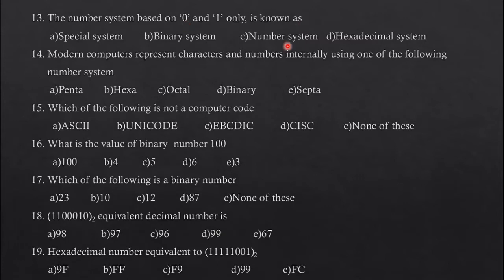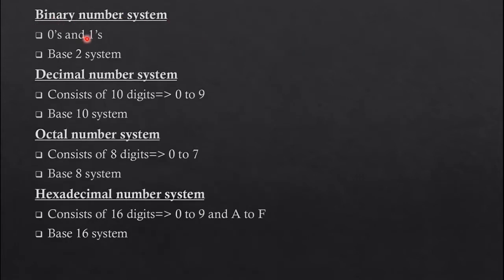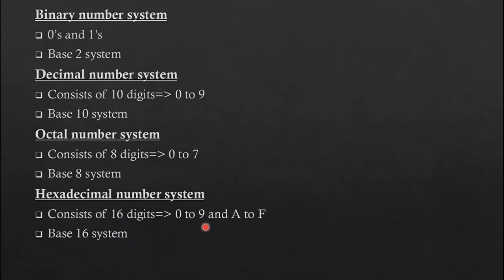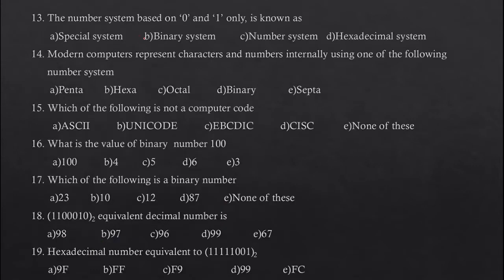The first question is: the number system based on 0 and 1 only is known as binary number system — base 2. Decimal number system has 10 digits, 0 to 9 — base 10. Octal number system consists of 8 digits, 0 to 7 — base 8. Hexadecimal has 16 digits: 0 to 9 and alphabets A to F.